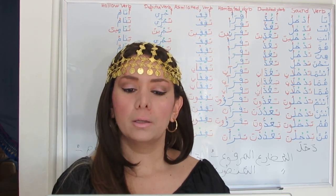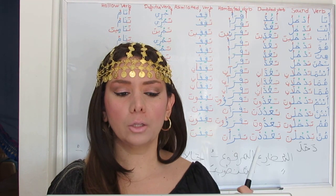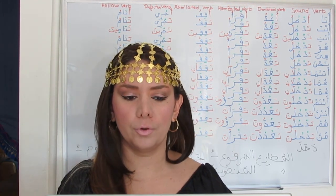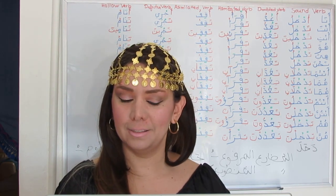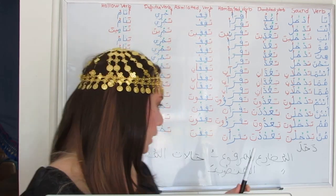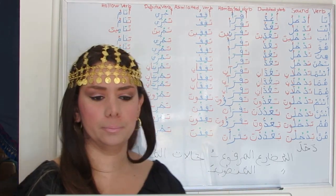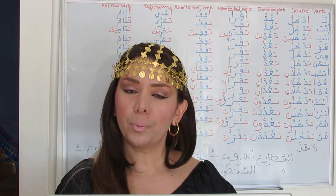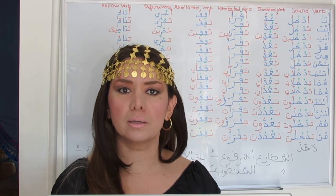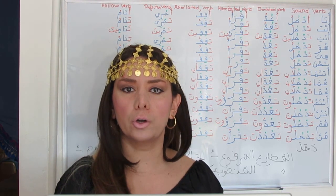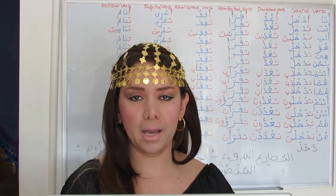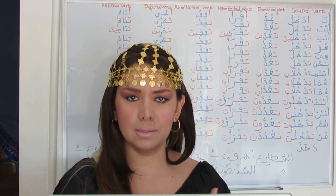However, these endings depend on the particles placed before the conjugated verb. In this lesson we will be discussing the imperfect indicative, Al-Mudari' Al-Marfoo'. The present tense or imperfect is used with actions that are still in progress — like 'I am eating,' where the eating action is not over yet.